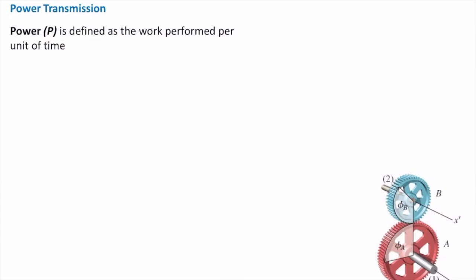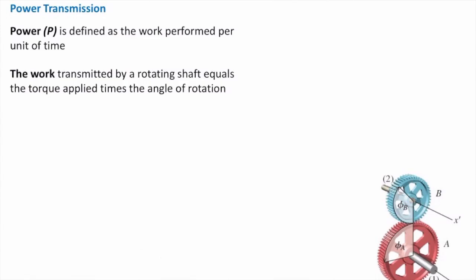But how can we define work in torsional elements? In mechanics, work is defined as force times deformation. In torsion, we define that as torque times twist. Because force is torque, and deformation that we expect to see in torsional elements is twist. So we can simply write it like this: work is equal to T times phi. And power is defined as work per unit of time. Or mathematically, I can write it like this: P is equal to d over dt times work. Here, d over dt means derivative of that parameter with respect to time.